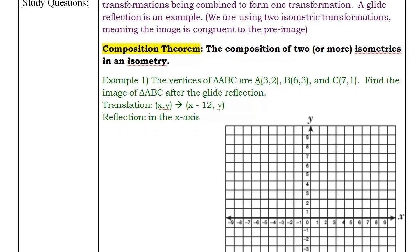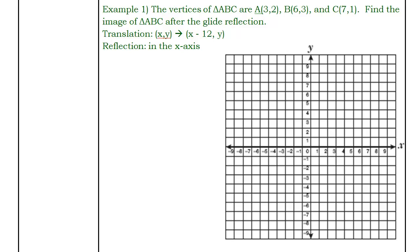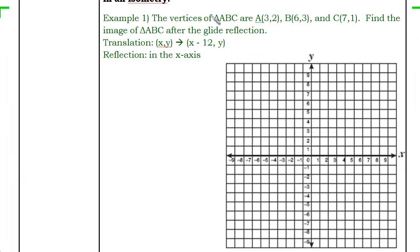In Example 1, we have triangle ABC at points A(3,2), B(6,3), and C(7,1). I'll go ahead and plot and connect those to form triangle ABC. They want to know where the image is after the glide reflection. Remember, the image comes after — the pre-image is before. So we're going to translate it: each coordinate moves by x minus 12, y unchanged. That means I subtract 12 from all the x-values.